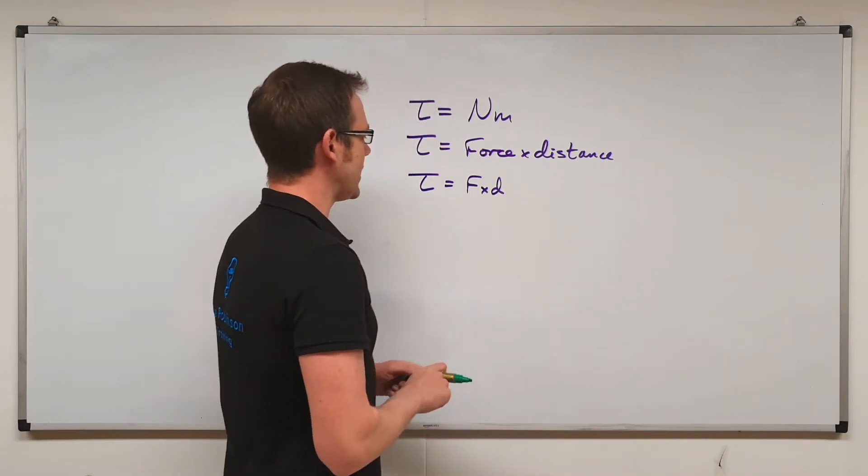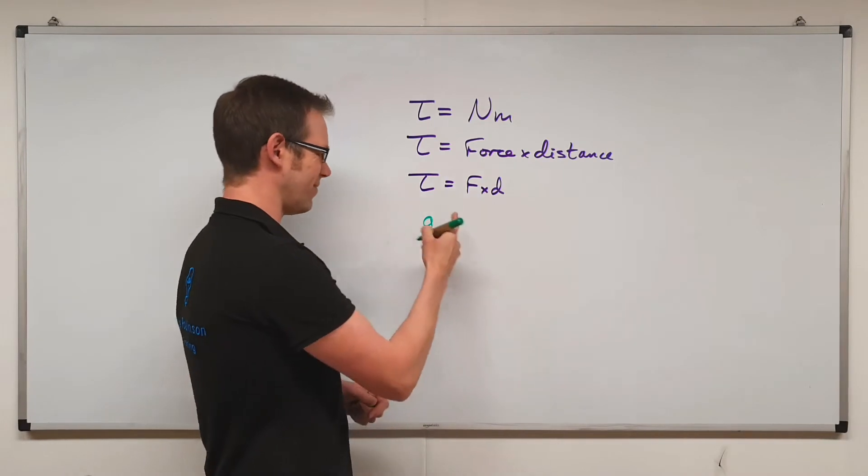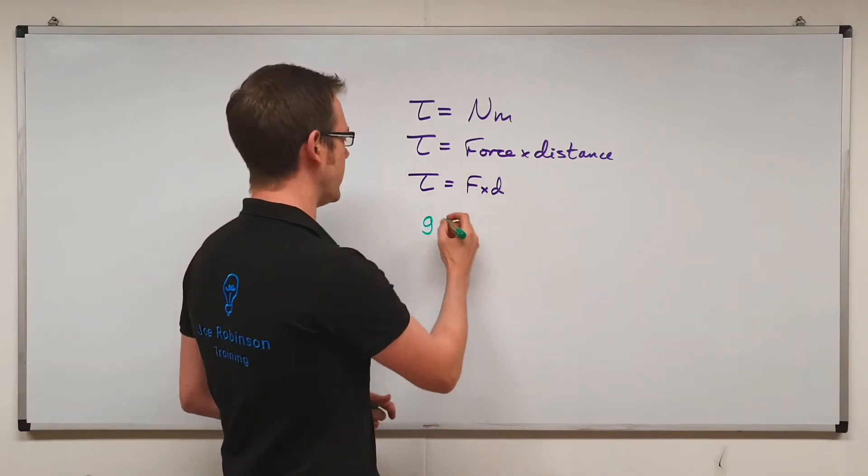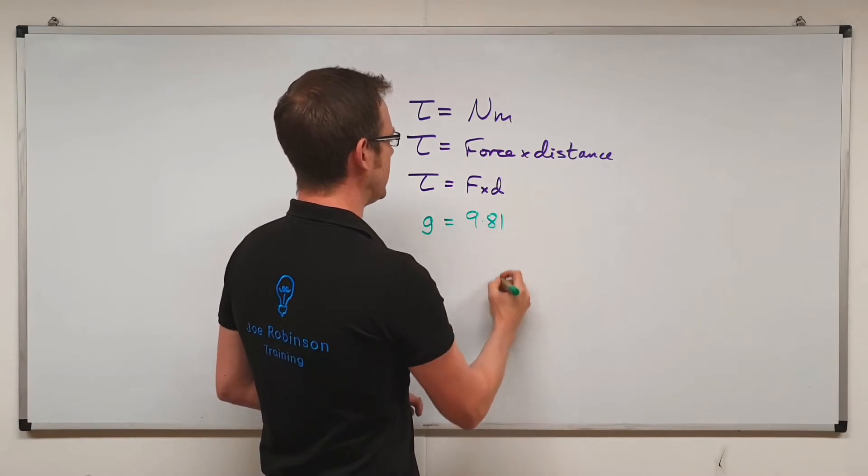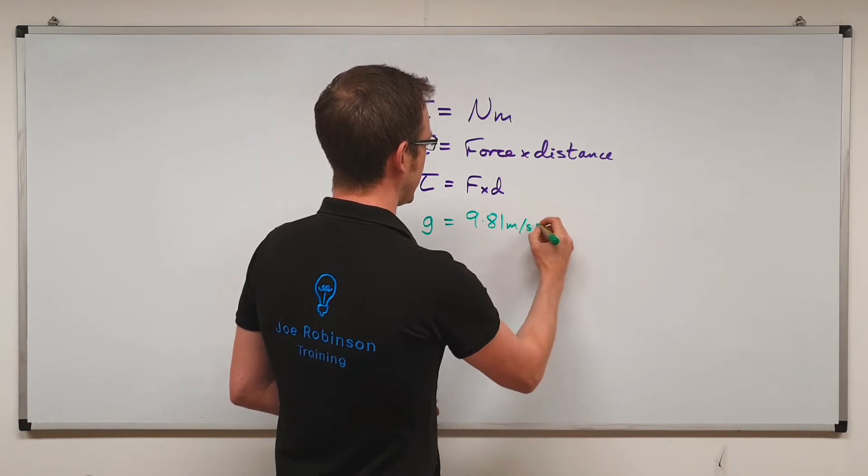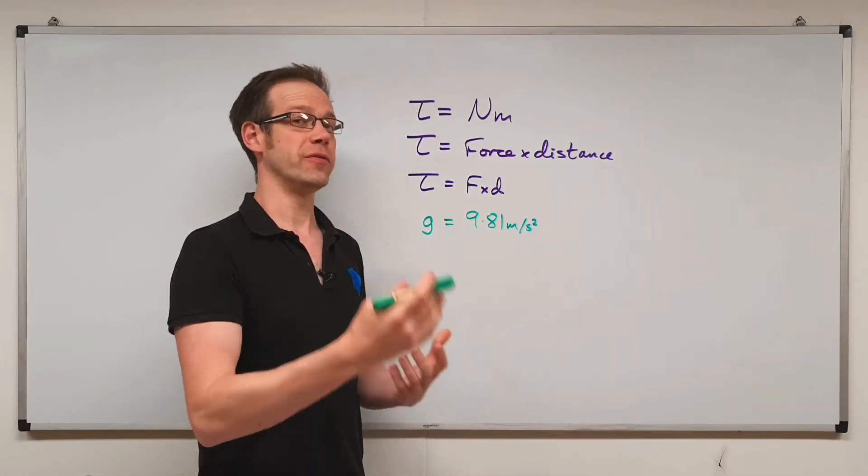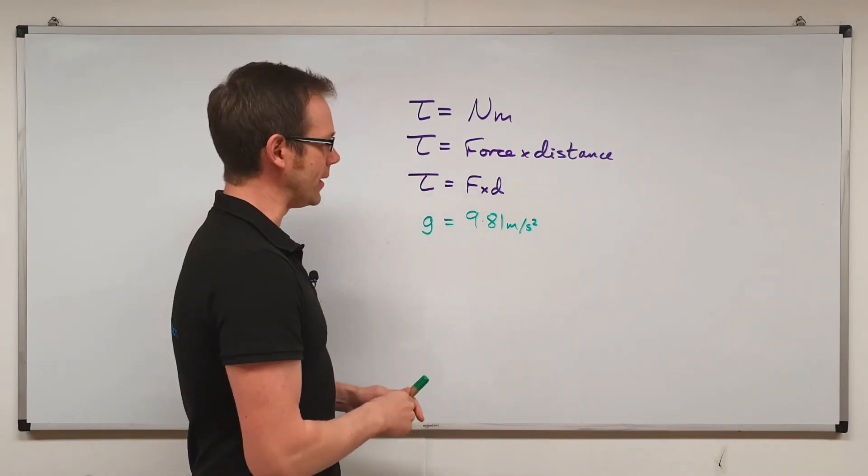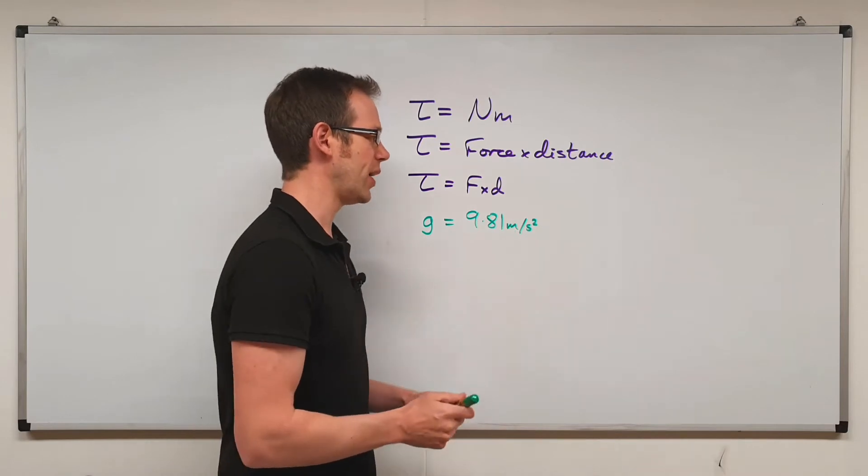So we can write that down like this. We can say that on Earth, the gravity, sometimes informally represented with a lowercase g, is equal to 9.81. And it's an interesting unit for this. It's meters per second squared. That's actually how we measure the force of gravity on different planets. So here on Earth, we've got a gravity of 9.81 meters per second squared.